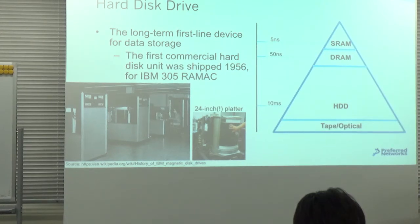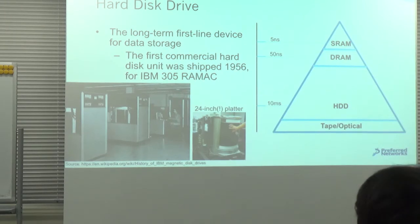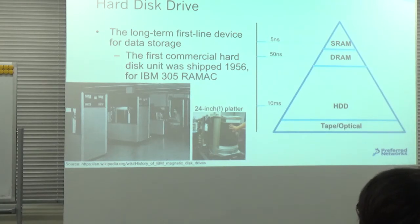I think you know what a hard disk drive is — it's a very long-established device for data storage. Google told me that the first commercial hard disk unit was shipped in 1956 from IBM, and that was a 24-inch radius disk.